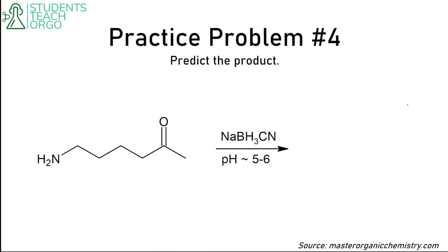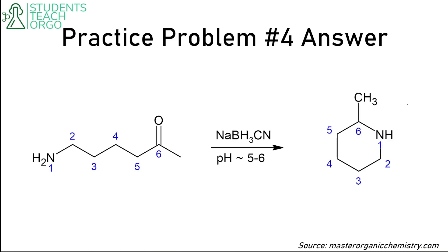Predict the product for this intramolecular sodium cyanoborohydride reaction. We have one, two, three, four, five, six atoms that we can make a six-membered ring. You would attach this amine to carbon number six, remove the carbonyl, remove a hydrogen, and that's all you need to do. This is a pretty useful and straightforward reaction as a whole.